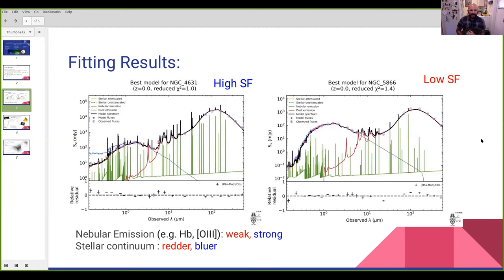We also see that in the low star forming galaxy, the stellar continuum is emitting at the sub-millimeter or 100-micron area. While in the star forming galaxy, the stellar continuum doesn't quite reach that far.